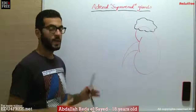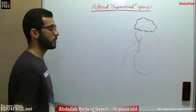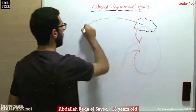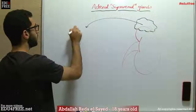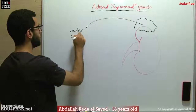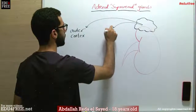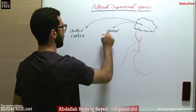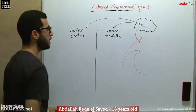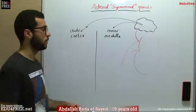Each gland consists of two main parts: we have an outer cortex and an inner medulla, and each one of these parts secretes its own hormones.